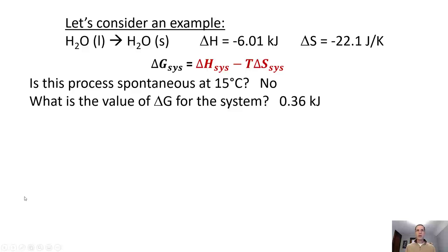So is this process spontaneous? The answer is no, because we got a positive value of delta G. A positive delta G means that our change for the universe would be negative, since those two things have opposite signs.